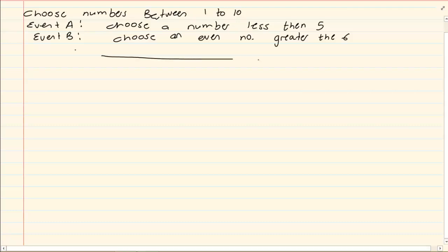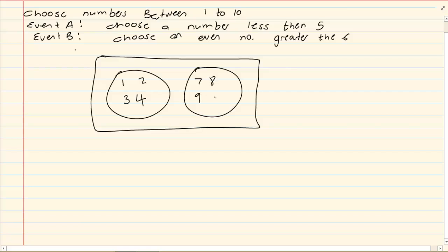So if we had our Venn diagram, less than 5 is 1, 2, 3, 4. And then we have greater than 6 which means it's 7, 8, 9, 10. Now the numbers that are missing is 5 and 6.